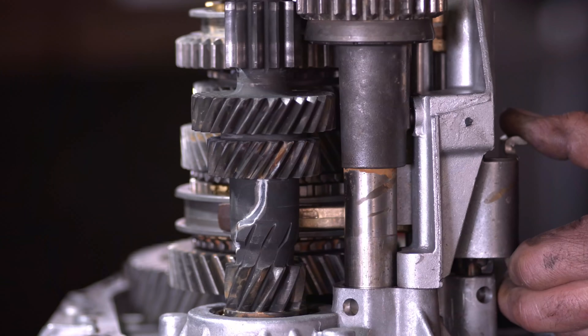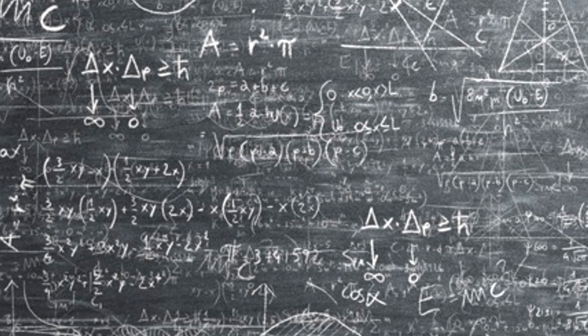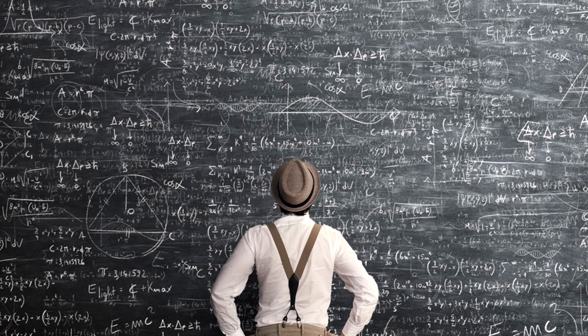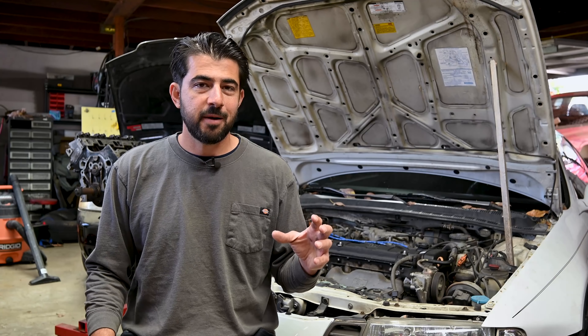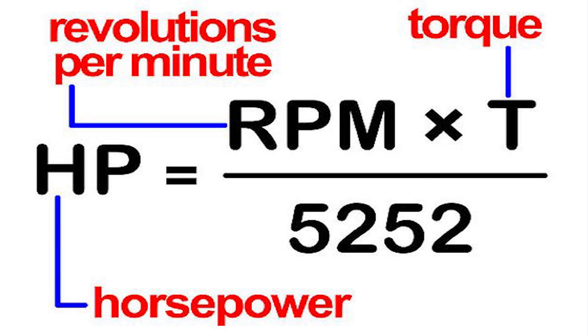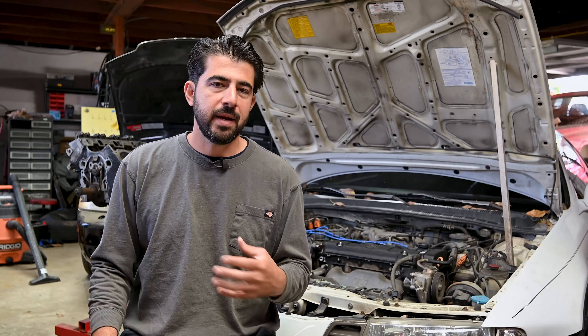Next let's talk about horsepower. Horsepower is basically a calculation — emphasis on the word calculation — of work, or twisting force in our case, done in a particular time period. Emphasis on the time period as well. The formula for horsepower is: horsepower equals torque times RPM — revolutions per minute — divided by 5252. Now 5252 is just a constant used for calculating horsepower and torque when talking about an engine.